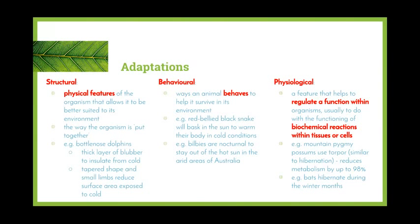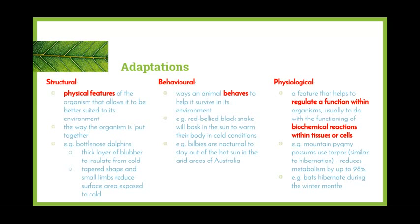Recalling from Year 11, adaptations are divided into three areas. Structural adaptations are physical features of the organism that allow it to be better suited to its environment — an adaptation is only considered one if it helps the organism survive. An Australian example is the bottlenose dolphin, which has a thick layer of blubber to insulate it from the cold, and also has a tapered shape and small limbs to reduce the surface area exposed to cold water.